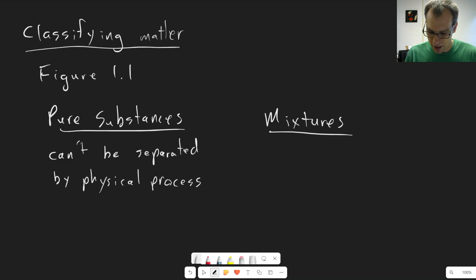Whereas mixtures are things that can be separated by physical processes. And the whole idea of separating mixtures out is a really important idea in chemistry and something that people spend a lot of time and money working on.